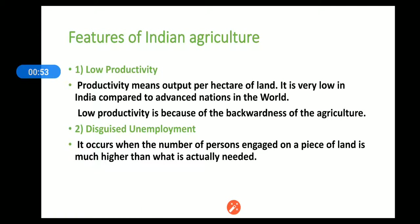Using modern technologies, modern inputs, and high yielding varieties of seeds increases productivity. Low productivity is because of the backwardness of Indian agriculture. Isi ke chalte yahan pe productivity bahut low hoti hai. Advanced and developed countries ki agriculture productivity zyada hoti hai. So first feature is low productivity.